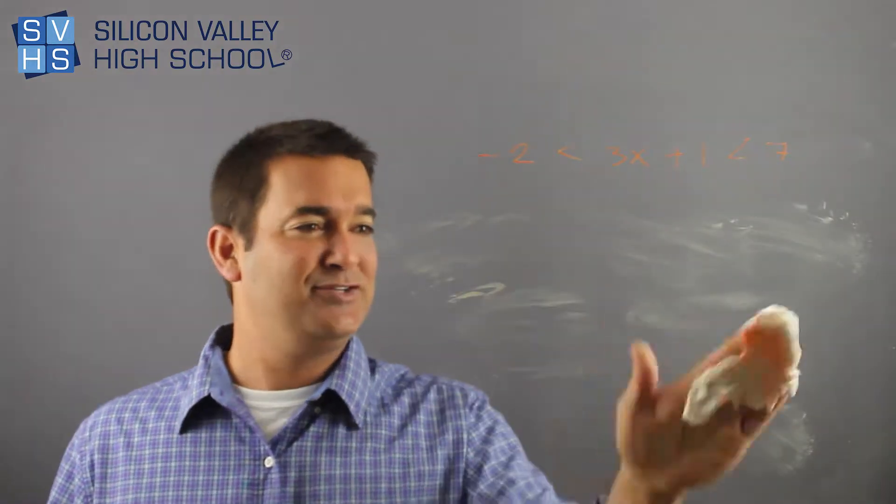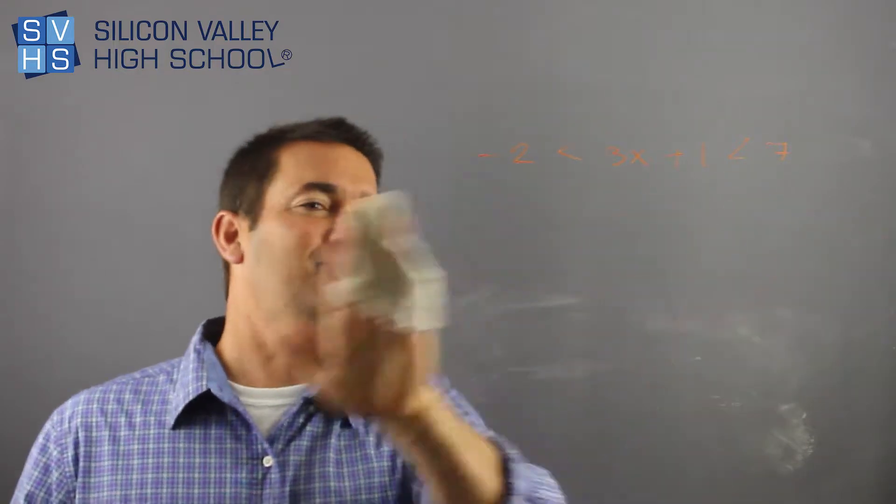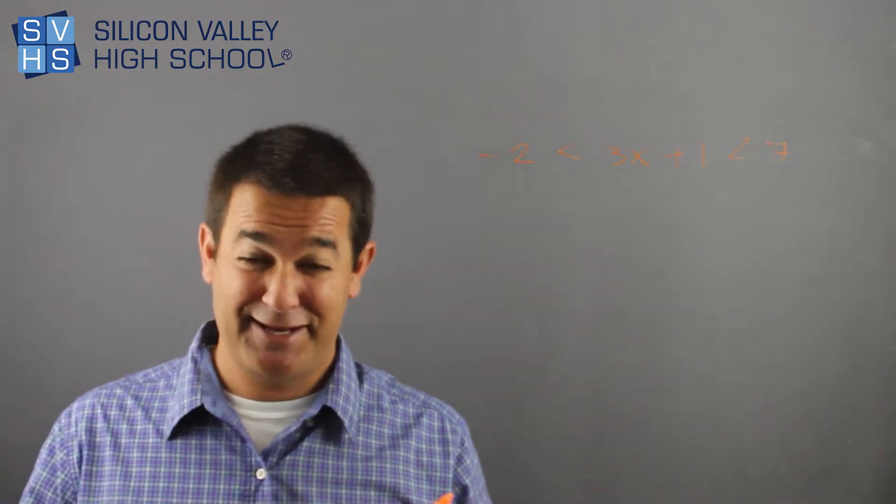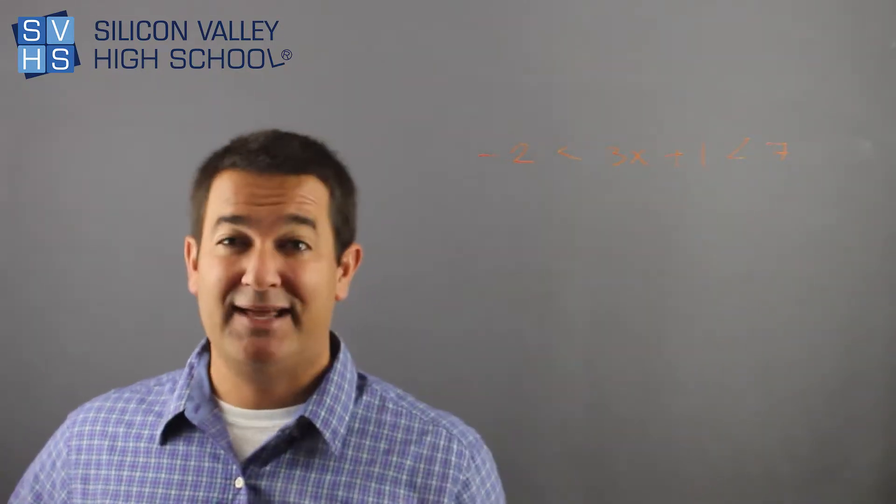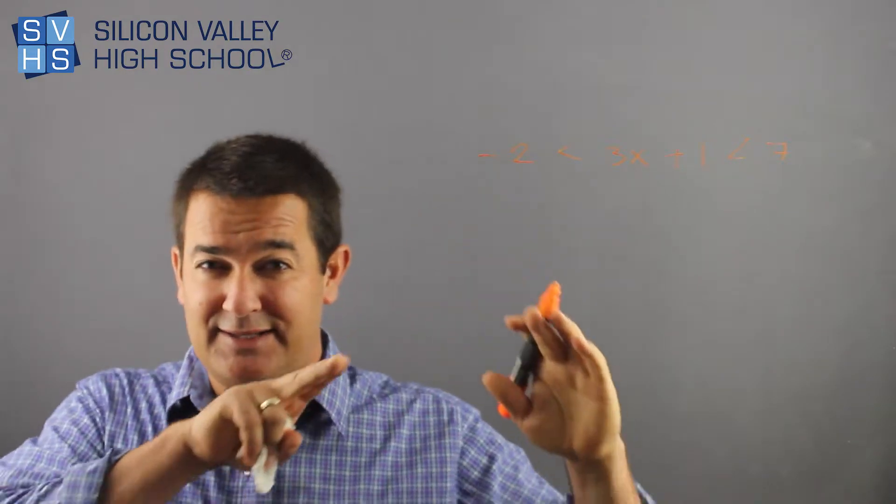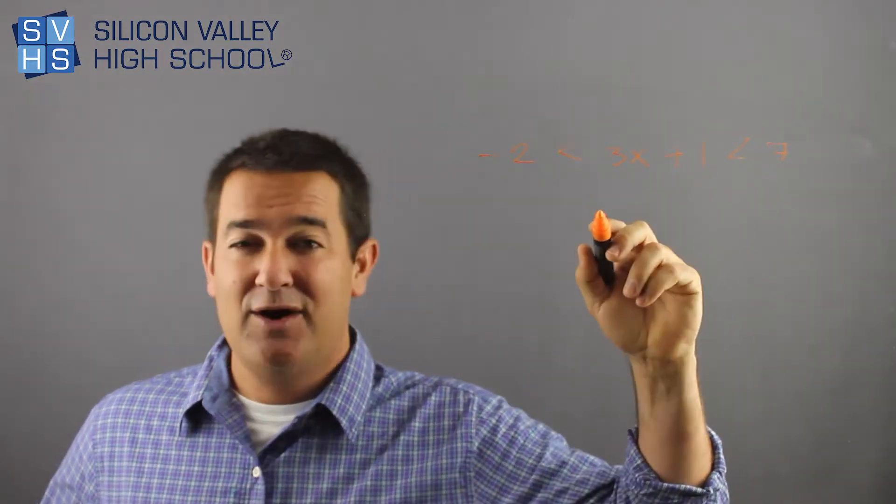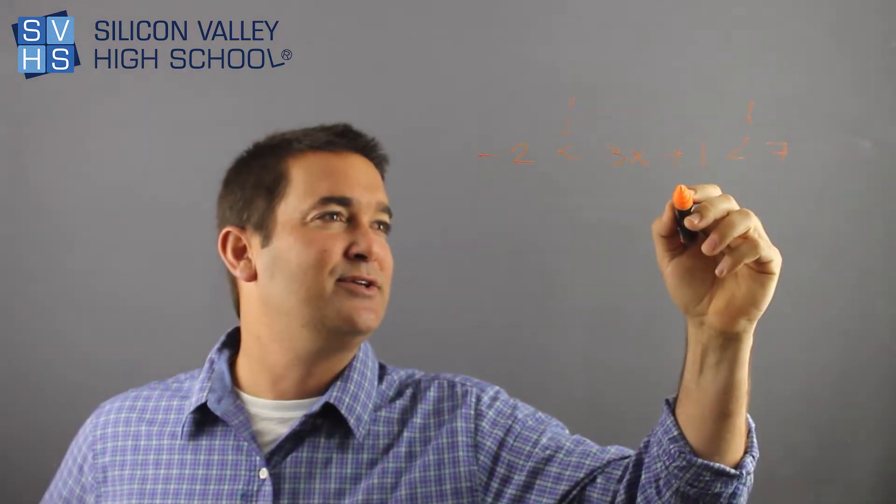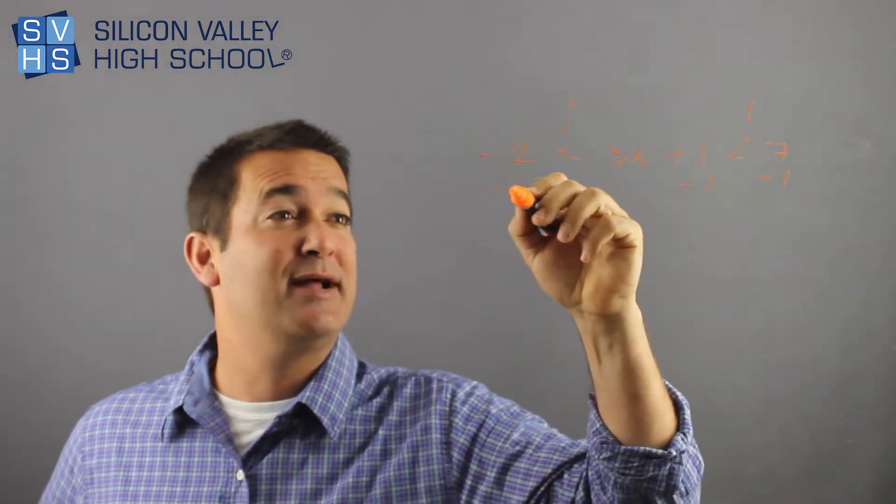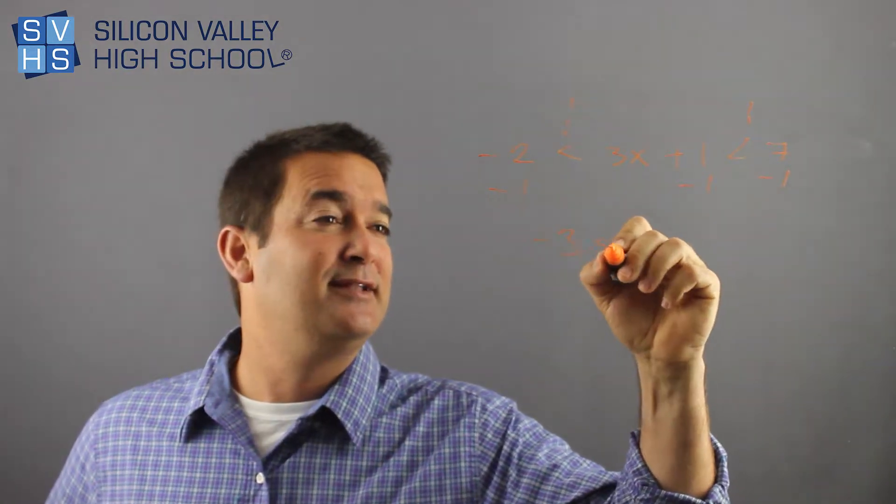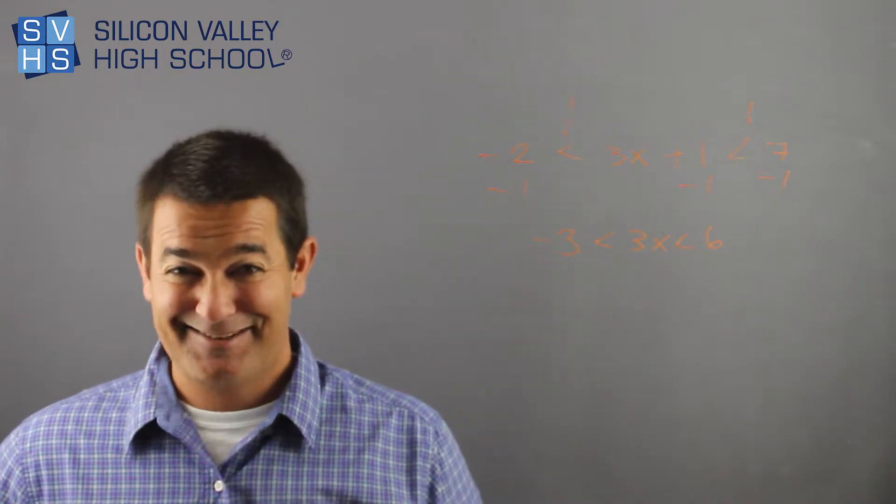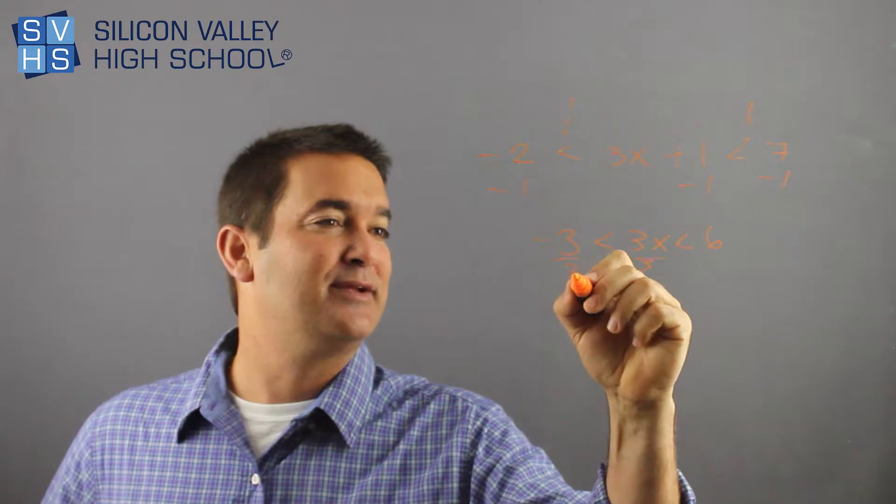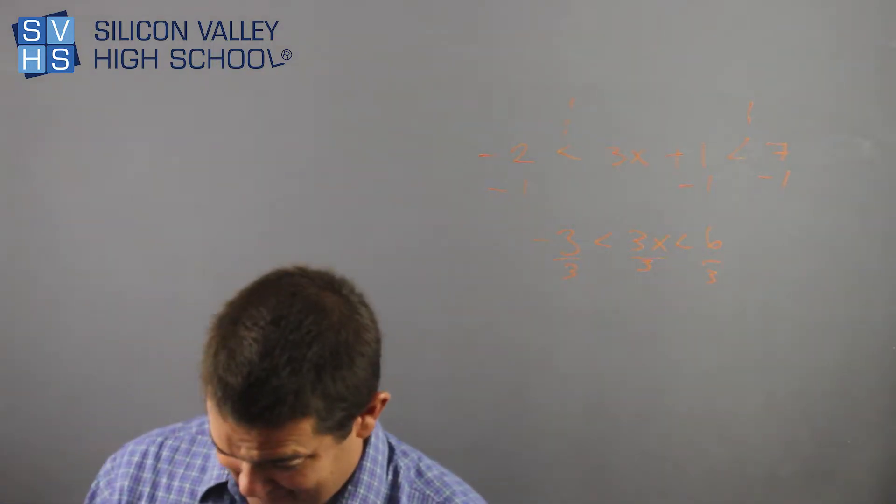Now that I showed you that way, I'll show you the super slick way to do it. You could leave it like this and immediately solve it without breaking it into two separate problems. See this plus one, you know how you have to minus one to the other side, well now there's two other sides, so you would minus one, minus one, minus one. And now you'd have negative three less than 3x less than six. That's pretty cool, and now you'd divide all three sides by three, and then you'd have your answer. It's a lot faster and it's kind of cool.